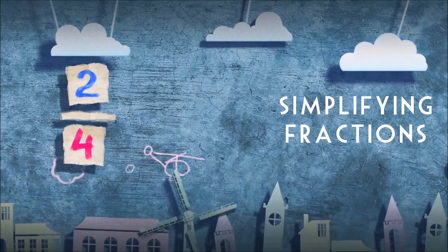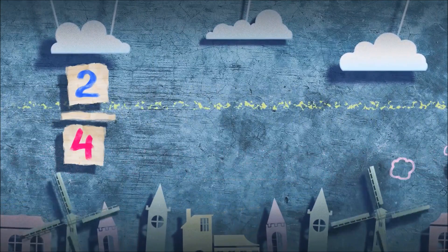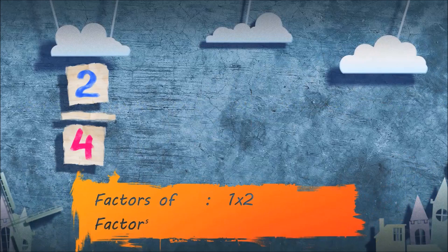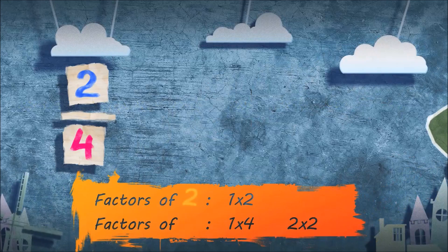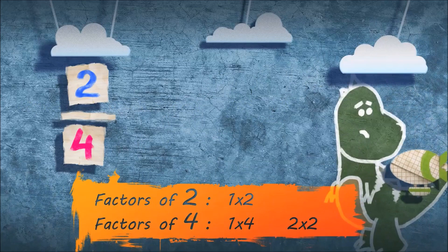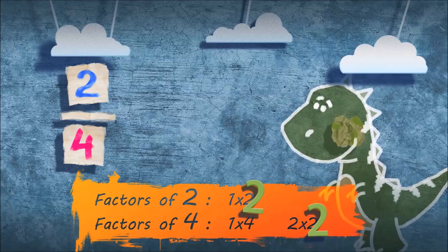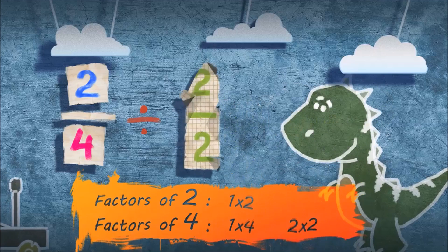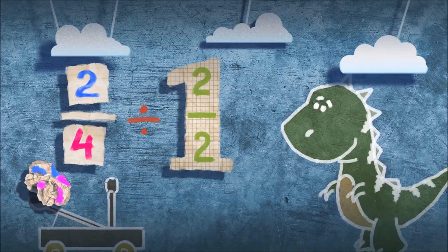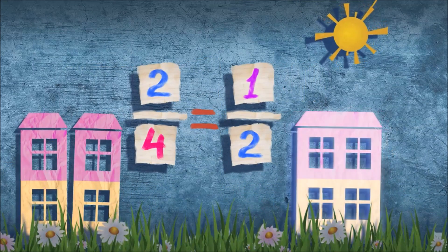To convert two-fourths to simplest form, write out all the factors of two and four. The greatest common factor is two, so divide them both by two. Two-fourths equals one-half — and here's what we do.